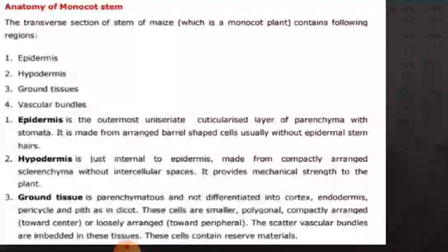The transverse section has a stem of maize which is monocot, containing the following regions: number one is epidermis, number two is hypodermis, number three is ground tissue, and number four is vascular bundles.